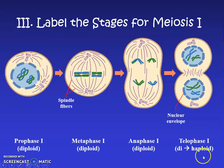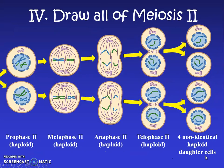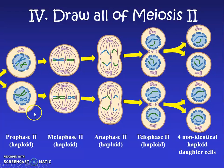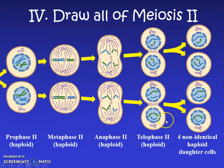Make sure on your notes you've labeled the phase names and haploid or diploid. Now for meiosis 2 — remember there are two rounds of division, so PMAT is happening again. Label prophase 2 — still haploid with one copy of each chromosome. Then metaphase 2, they meet in the middle again; anaphase 2, pulling apart again; telophase 2, two new nuclei form again.